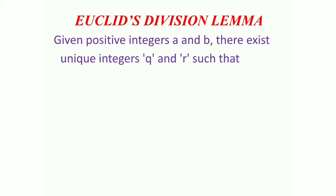Euclid's Division Lemma states that given two positive integers a and b, there exist unique integers q and r such that a is equal to bq plus r, where 0 is less than or equal to r, which is less than b. For example, if a is 7 and b is 3, dividing 7 by 3 gives quotient 2 and remainder 1. So 7 can be written as 3 into 2 plus 1. The remainder 1 is greater than or equal to 0 and is less than b, i.e., less than 3.